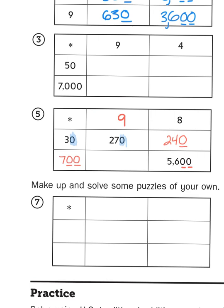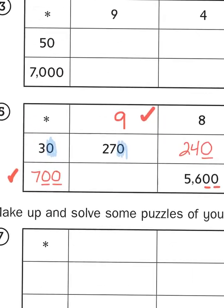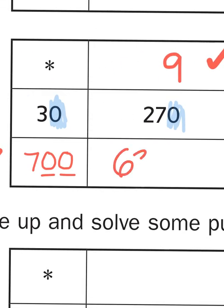And now that we have our missing factors here and here, we can now multiply them together. 9 times 700. 9 times 7 is, of course, 63. So 9 times 7 with two zeros behind it is going to give me 63 with two zeros behind it, otherwise known as 6,300.